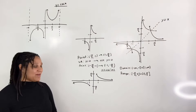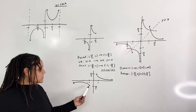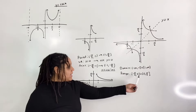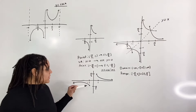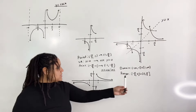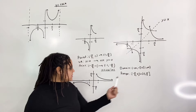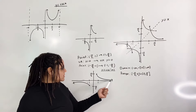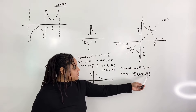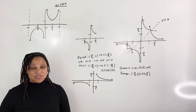Note that we have a bracket at negative pi over 2, meaning we are actually including negative pi over 2. We have a parenthesis at 0, meaning we're not actually including 0. Similarly, the next 0 is also excluded with a parenthesis. And we have a bracket at pi over 2, meaning we are actually including pi over 2.